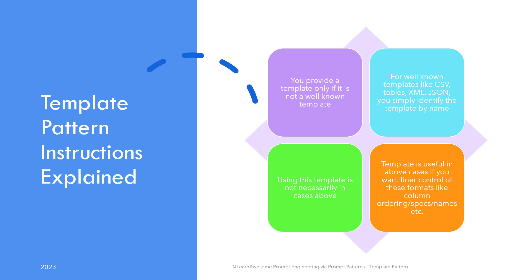The first statement instructs the model to follow your provided template to format its output and make it consistent with the user's need. Note that this template is used when the large language model is not aware of the intended format. If it is a well-known format, you can simply instruct the model to use that format and skip this pattern altogether — like organizing information as a CSV, the comma-separated value format. You don't need this pattern to generate CSV-style output. However, if generating a table and you want to be in control of column names and order, you should choose this pattern.